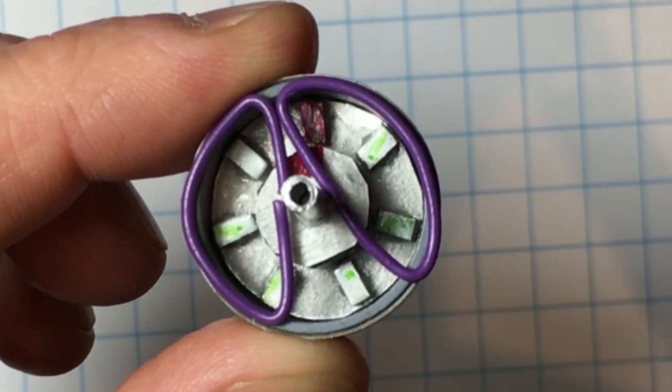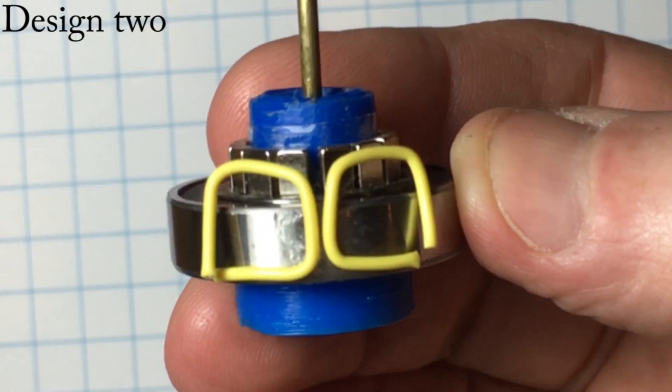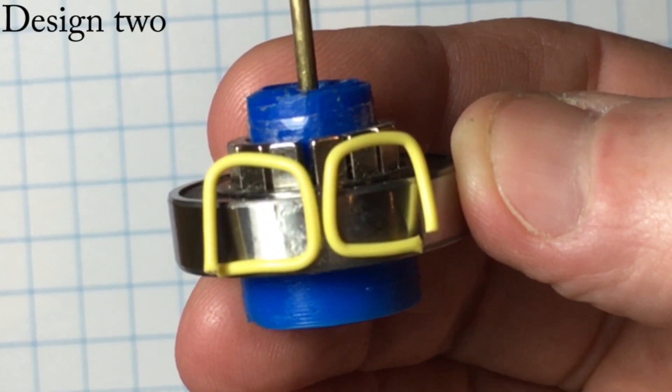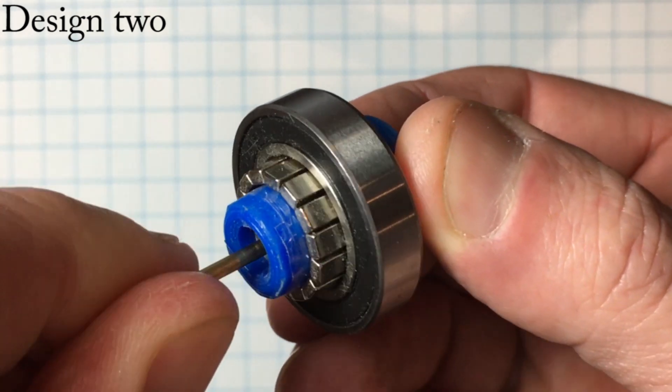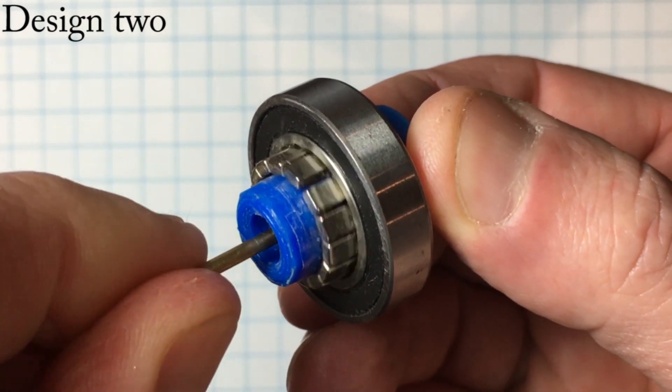This new design changes the flux path and reduces the flux path length by half. Reducing the flux path length increases the torque handling ability of the gearbox.